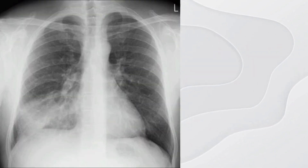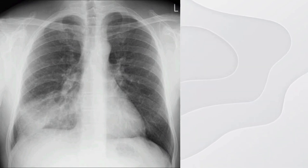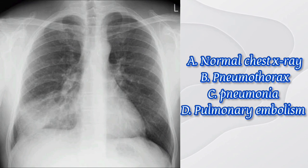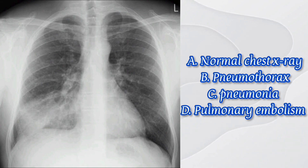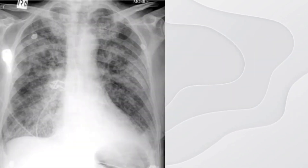Number six: select the most appropriate diagnosis for this radiograph. The options are: A) normal chest X-ray, B) pneumothorax, C) pneumonia, and D) pulmonary embolism. The answer is C) pneumonia.